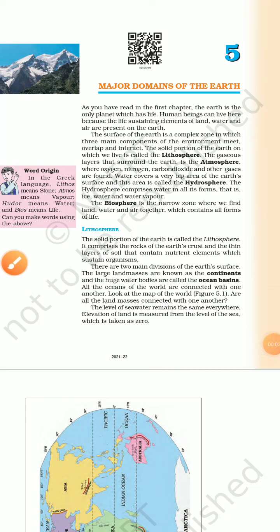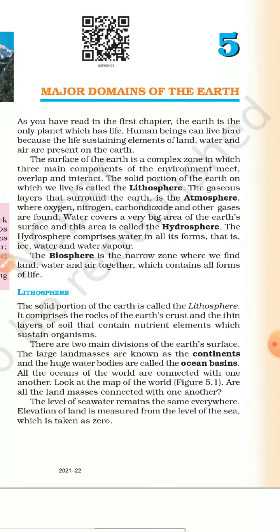Hello students. In this video today we are going to start Geography Chapter 5: Major Domains of the Earth. As we have already read in Chapter 1, the Earth is the only planet which has life. Human beings can live here on Earth because of life-sustaining elements like water, air and land.